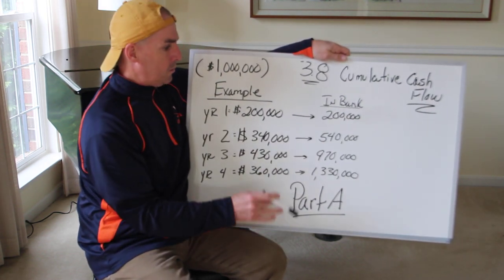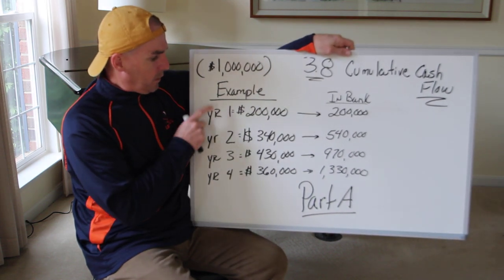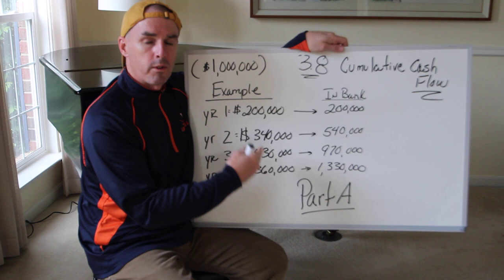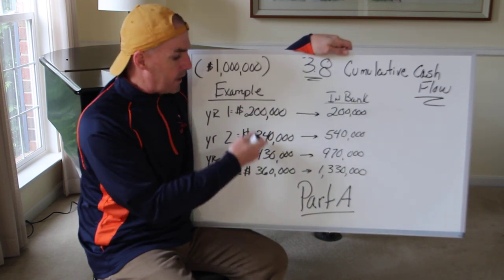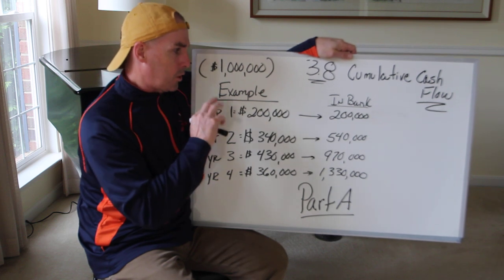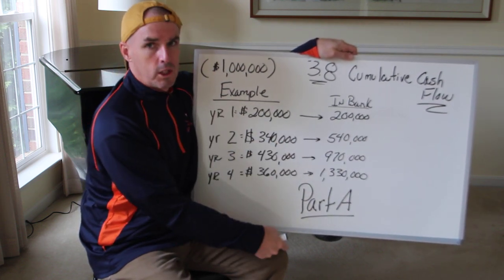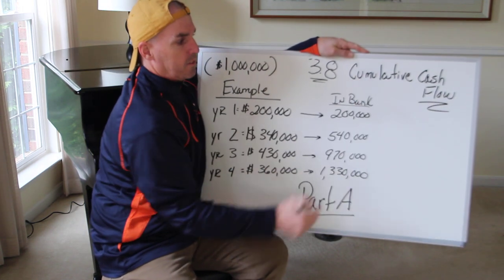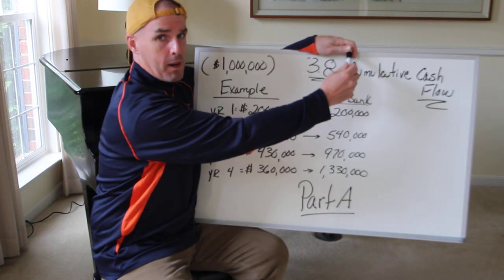So what happens with this is cash flow is not going to be the same from year to year. Some years are going to be higher, some years are going to be lower. So the problem of when you're going to get your money back is going to change. And we call this a cumulative cash flow problem or a cumulative cash flow payback problem.